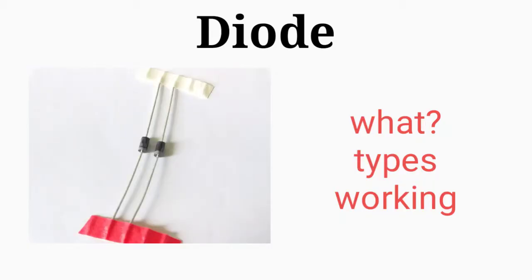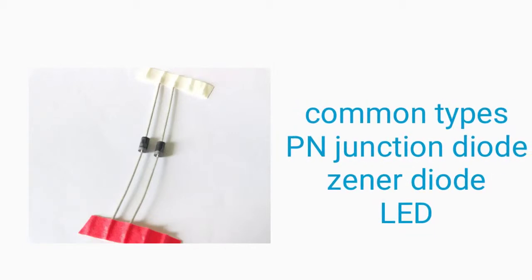In this video, we'll look at types of diodes. There are types of diodes including the PN junction diode and zener diode.